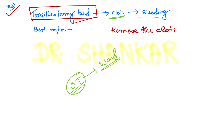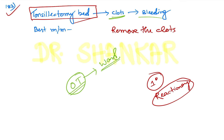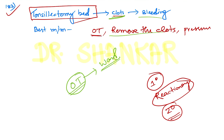There are three types of bleeding following tonsillectomy: primary, which occurs during the operation; reactionary, which occurs within 24 hours after OT; and secondary, which develops later due to infection. For reactionary bleeding caused by a clot, always remove the clot and apply pressure first. The right answer is to take the patient to OT, remove the clot, and apply pressure.